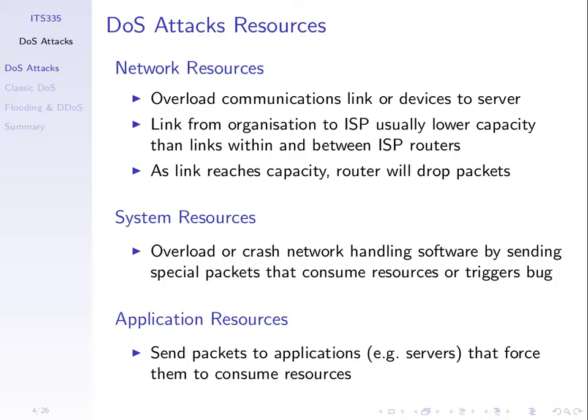From your computer — most likely. The link from your computer, at least if you're at home, to your ISP is normally the slowest in that path. We call the slowest link in the path the bottleneck, because the fastest you can transfer data between one endpoint and another is limited by the slowest link — the bottleneck link. So usually the link from your home to your ISP is the slowest in the path.